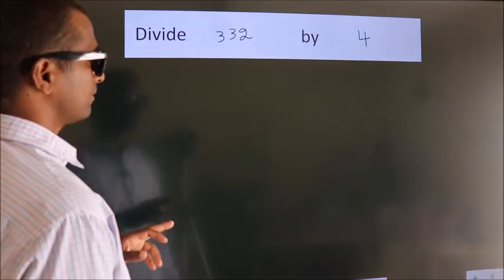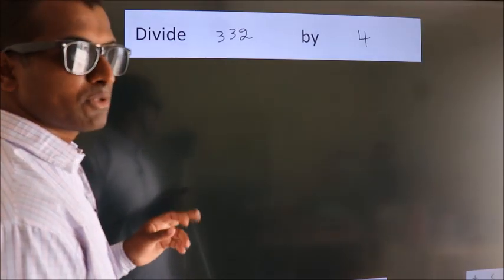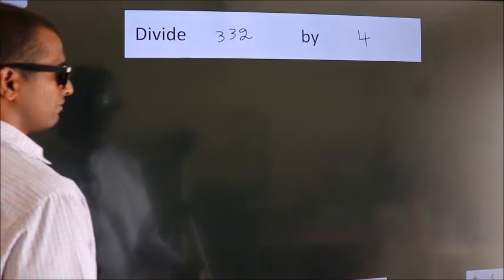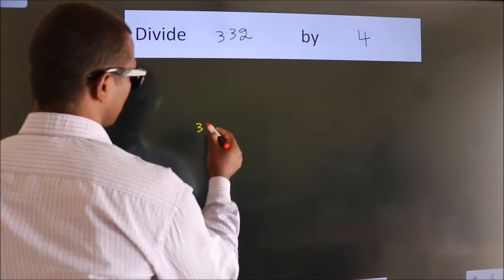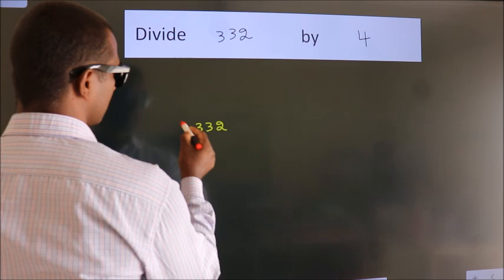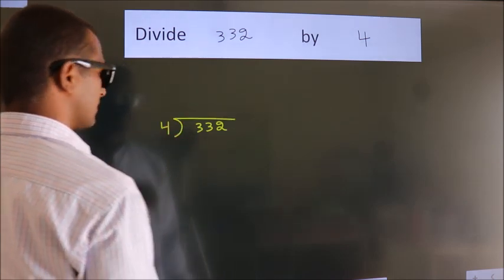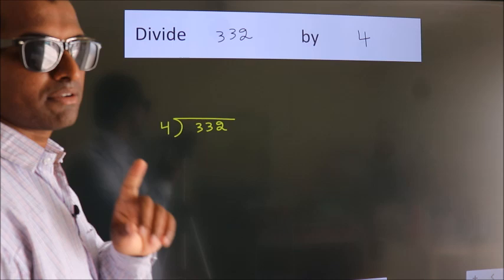Divide 3.32 by 4. To do this division, we should frame it in this way. 3.32 here, 4 here. This is your step 1.